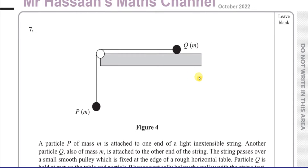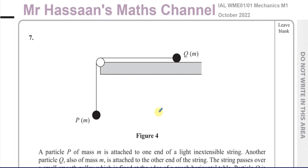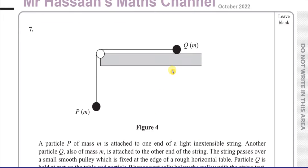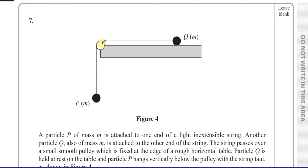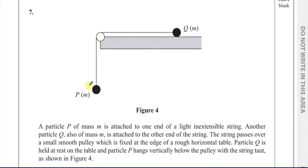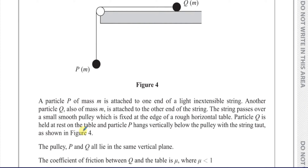This question is about connected particles. A particle P of mass M is attached to one end of a light inextensible string. Another particle Q, also of mass M, is attached to the other end. The string passes over a small smooth pulley fixed at the edge of a rough horizontal table. Particle Q is held at rest on the table and particle P hangs vertically below the pulley with the string taut. The pulley, P, and Q all lie in the same vertical plane.